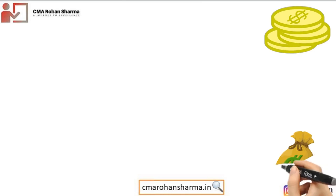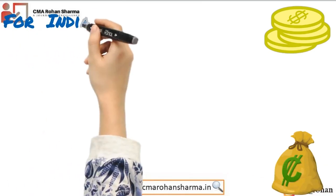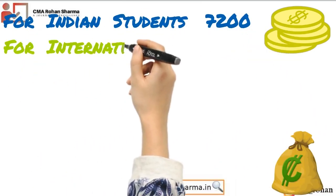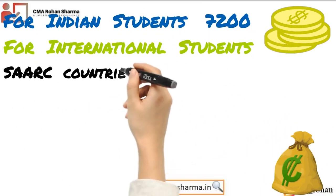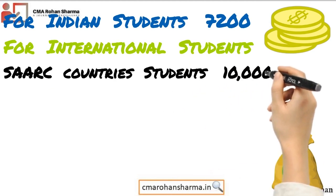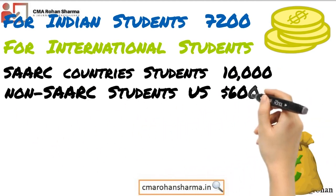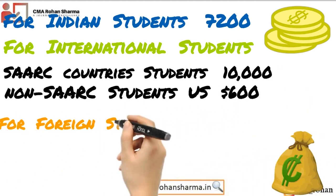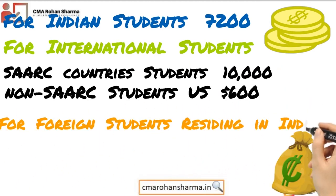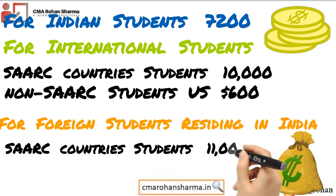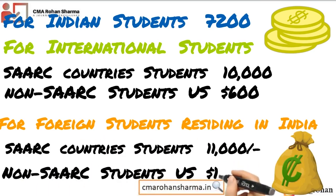Fee structure for Indian students: 7,200 rupees. For international students — SAARC country students: 10,000 rupees; non-SAARC students: USD 600. For foreign students residing in India — SAARC country students: 11,000 rupees; non-SAARC students: USD 1,000.